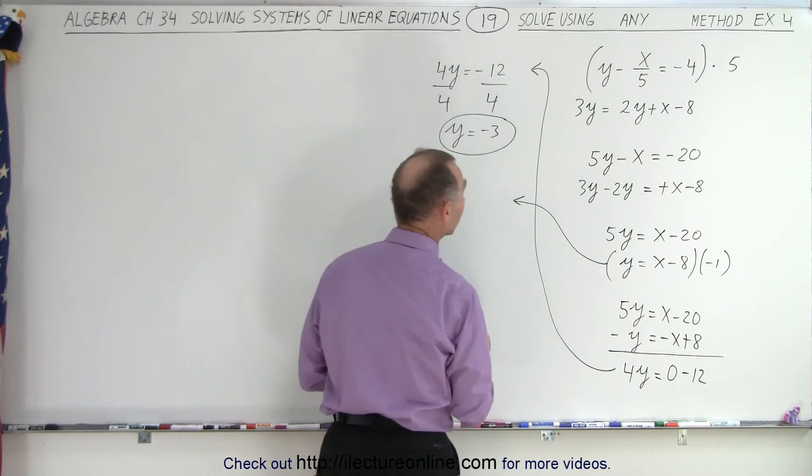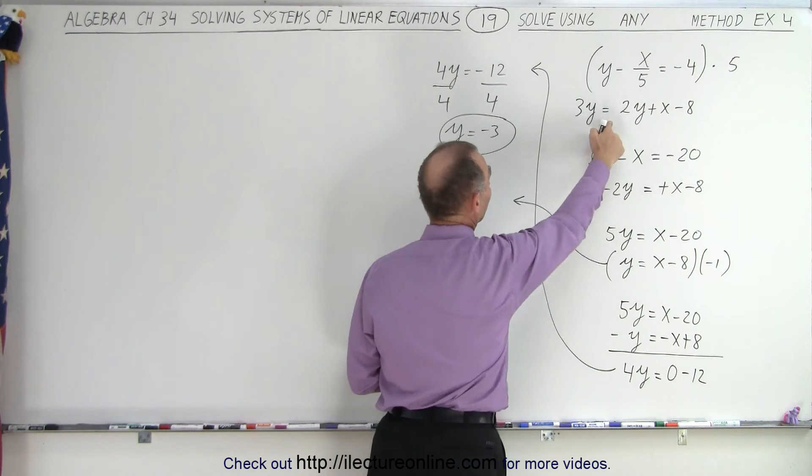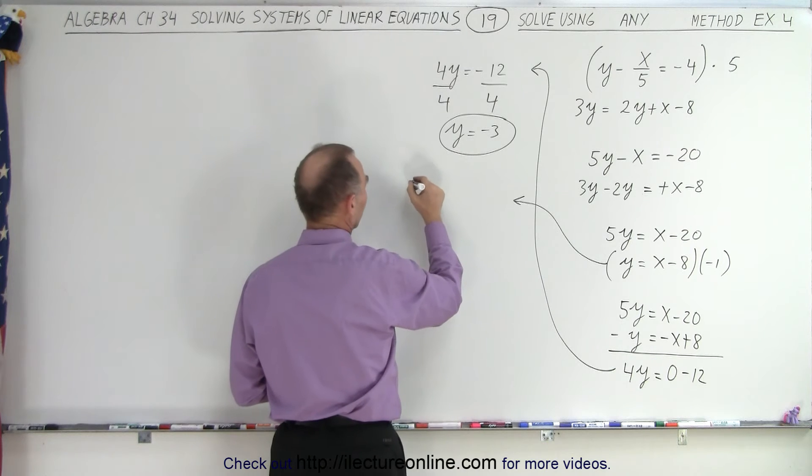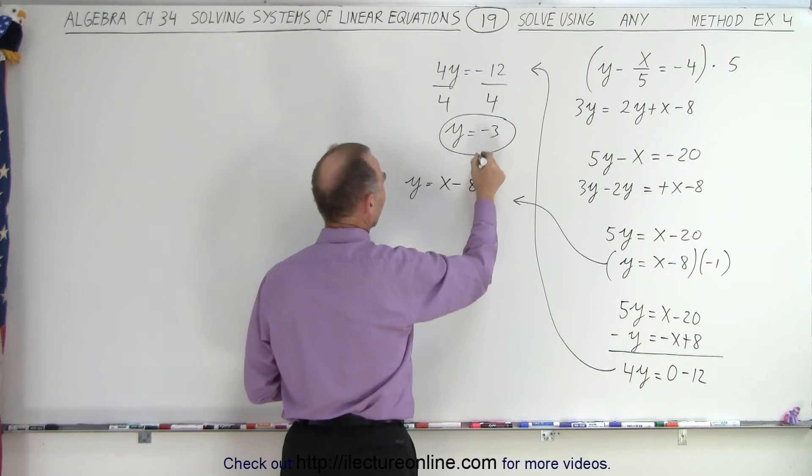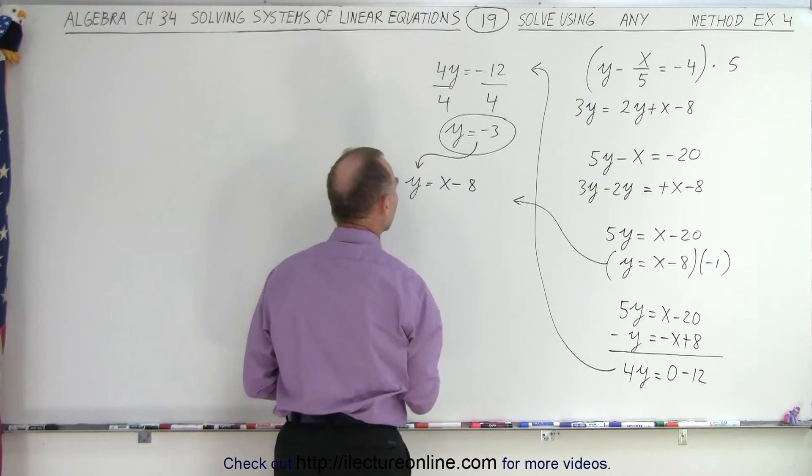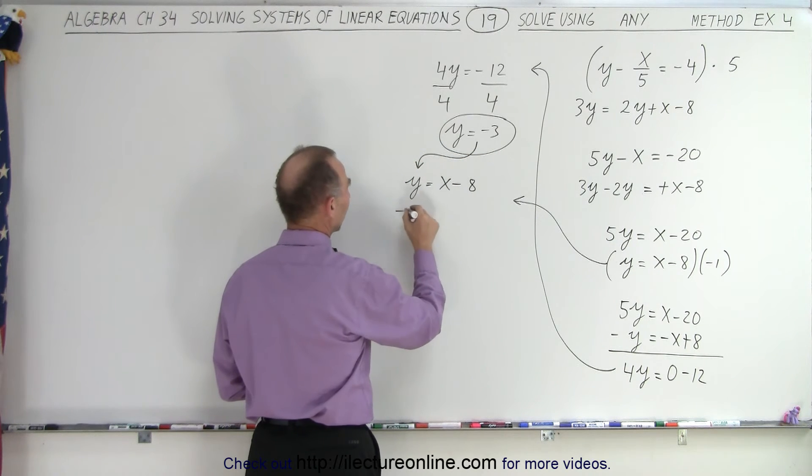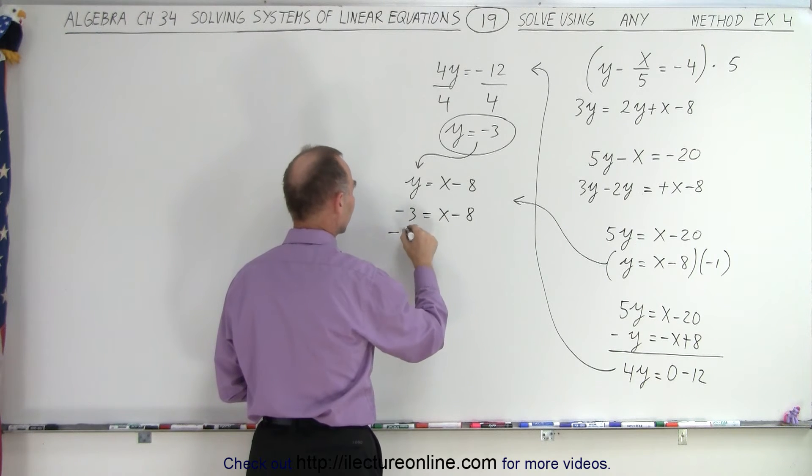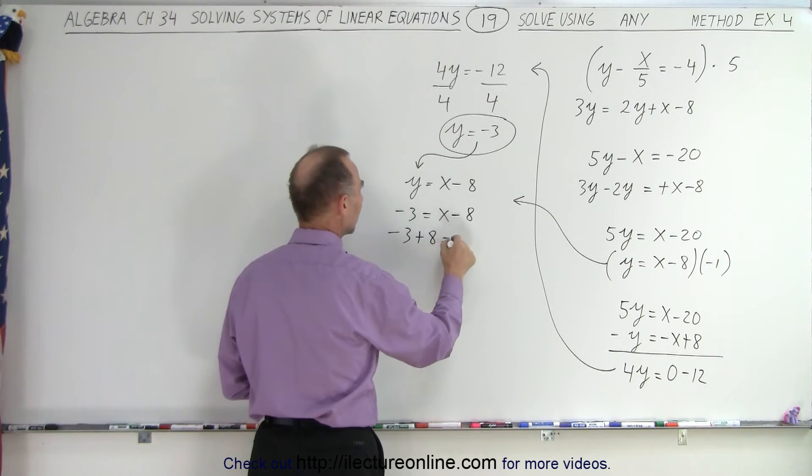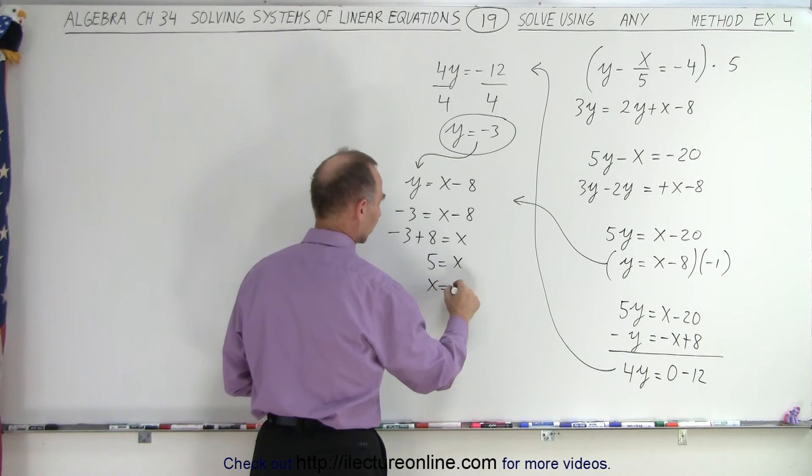So here we go. That happens to be the bottom equation rewritten. So we end up with y is equal to x minus 8, and then I can plug that into my variable y. So minus 3 is equal to x minus 8. Move the 8 to the other side. Minus 3 plus 8 equals x, or 5 equals x, or x equals 5.